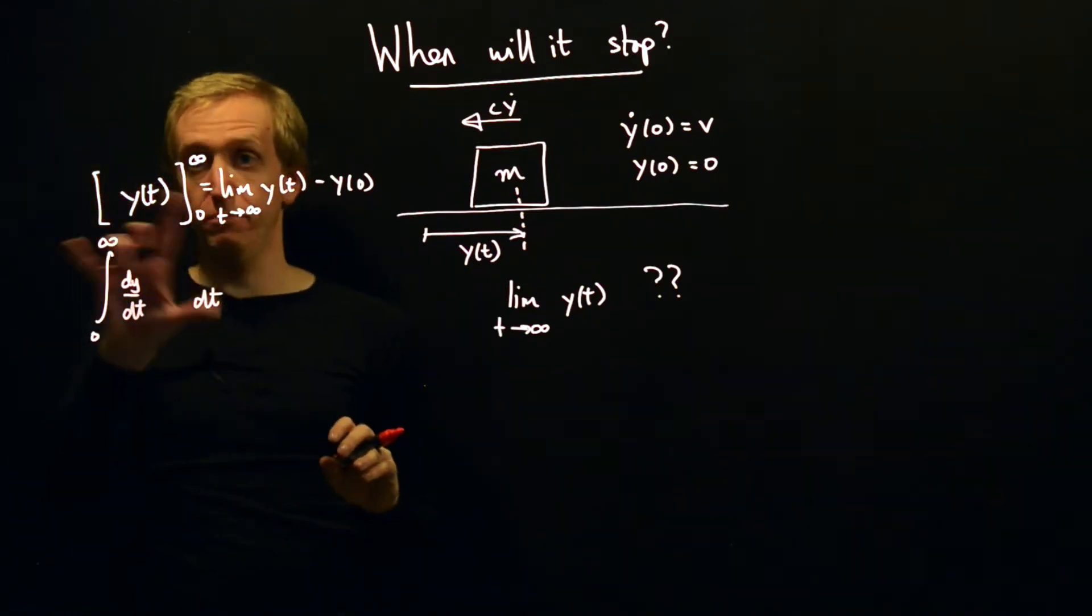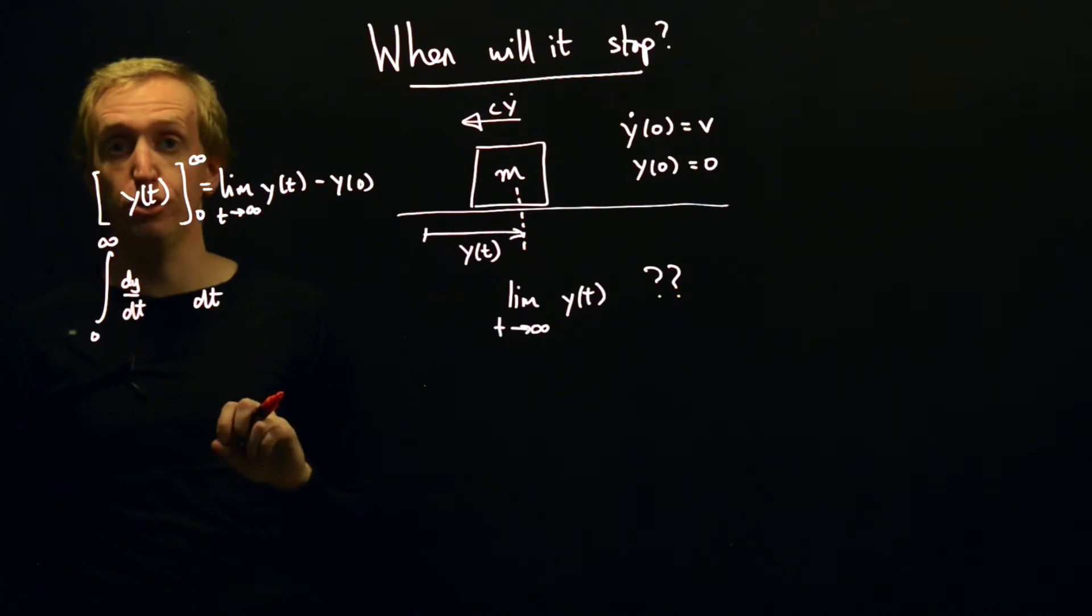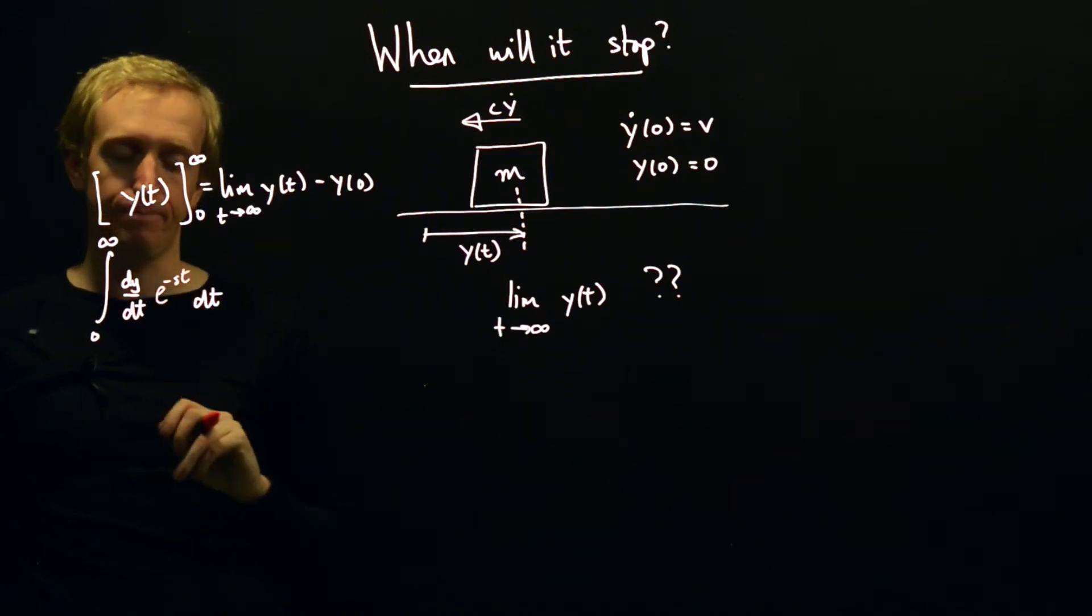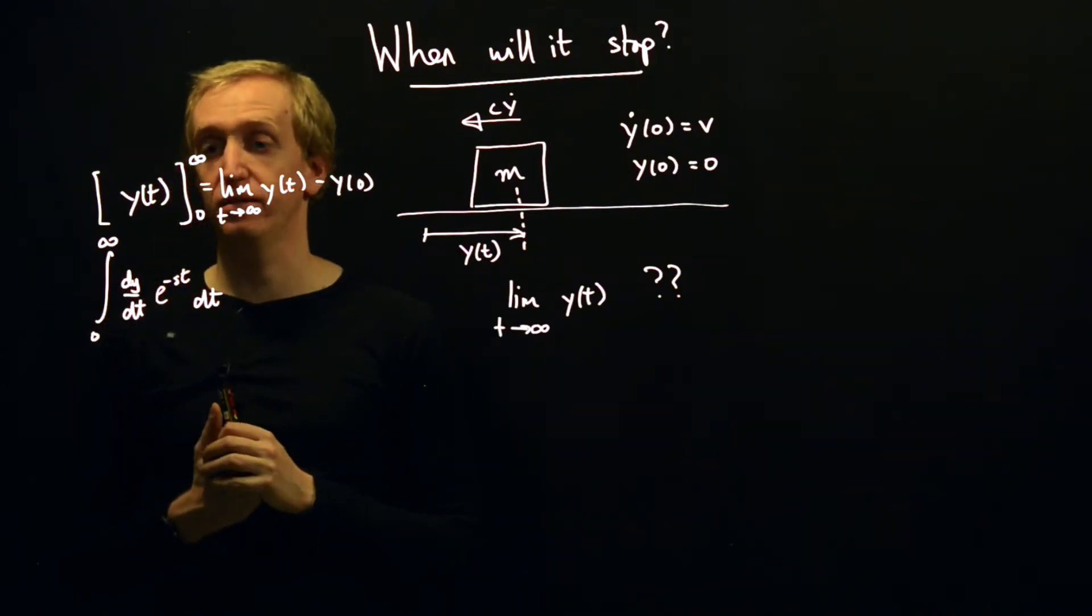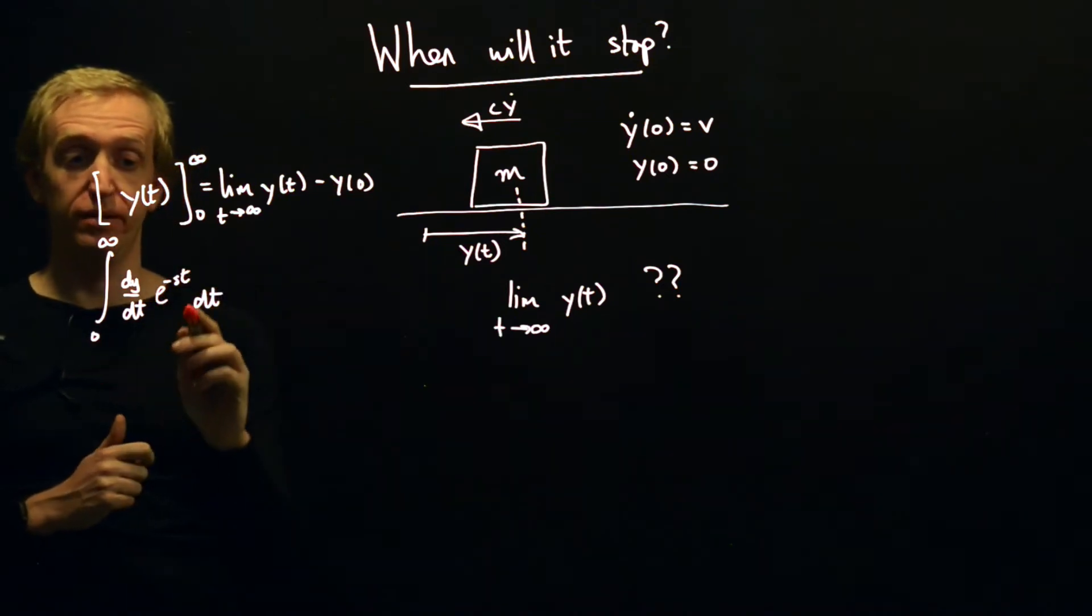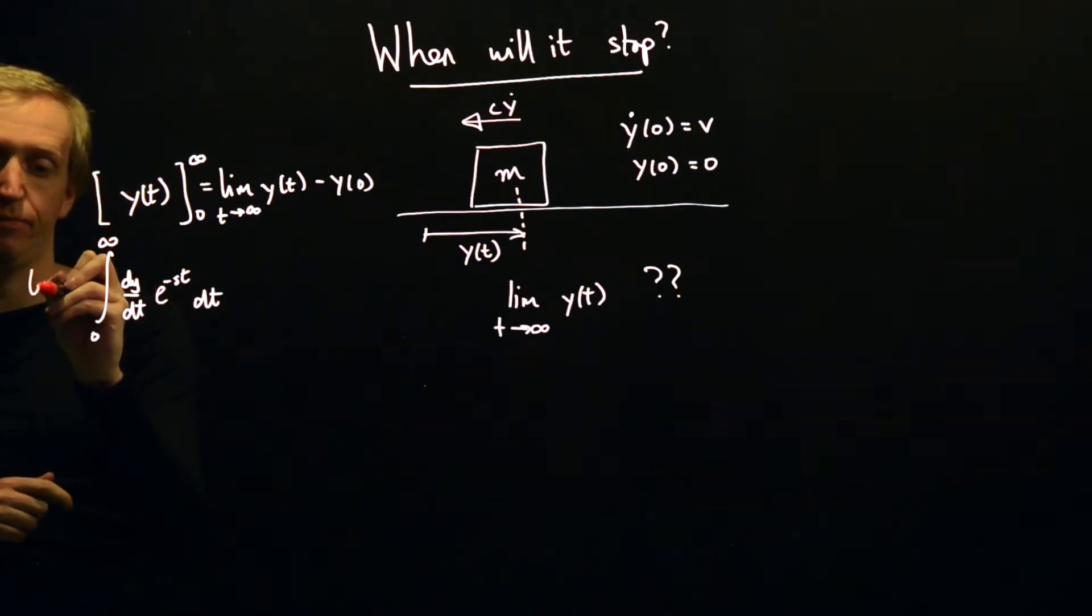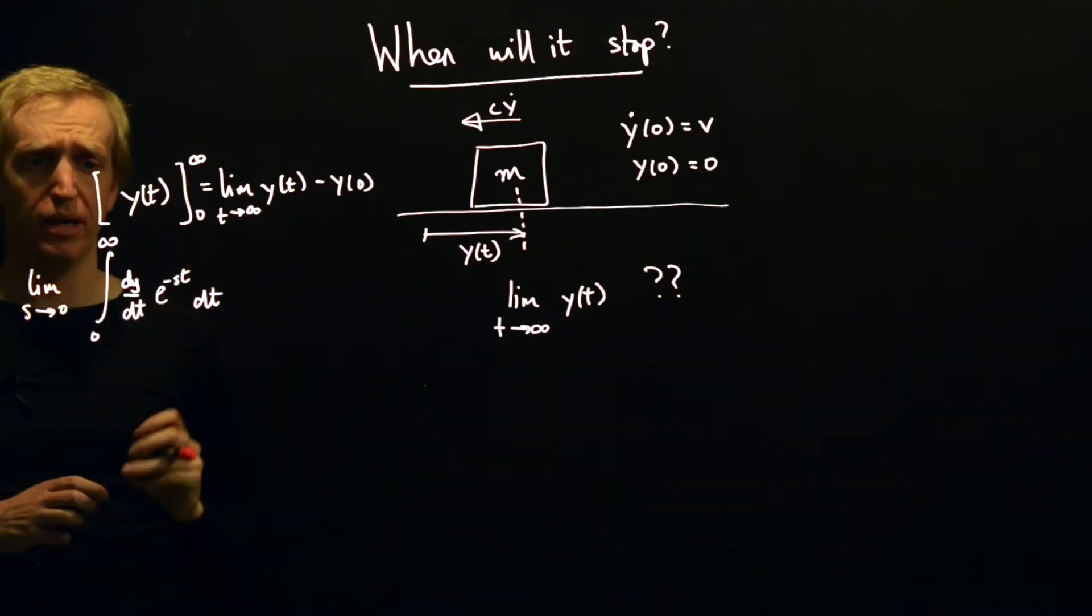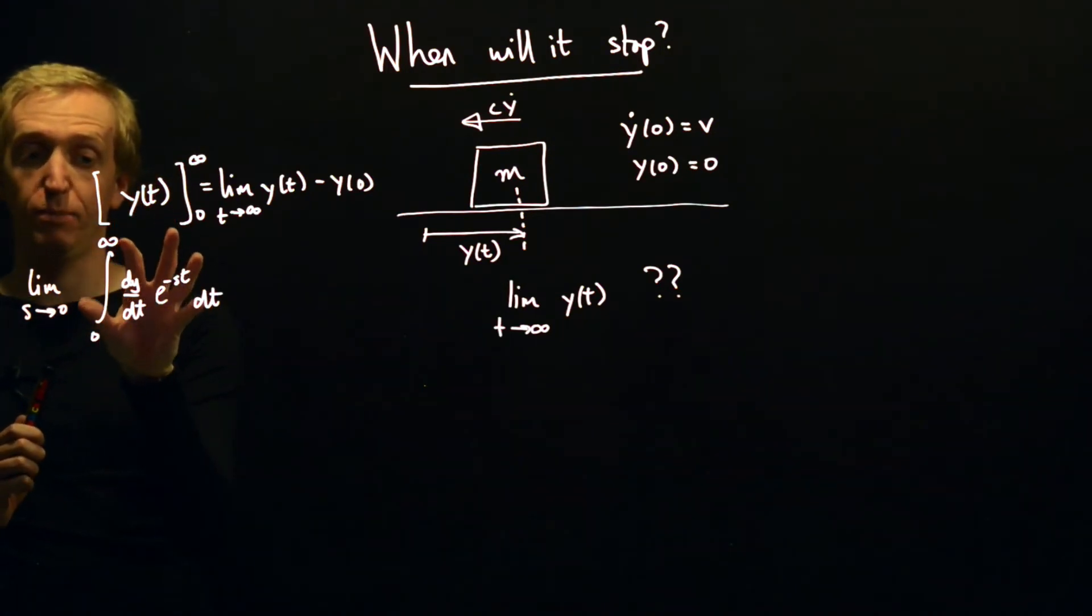So we've got sort of lots of the pieces of the definition of the Laplace transform. We've got the right limits. We've got the right integration variable. What are we missing? We're missing our e to the minus st. And so how can we make this give us y(t)? Well, we want this term here to be equal to 1 and to make this term equal to 1 what we have to do? We have to set s as equal to zero. So we need to take the limit as s goes to zero of this thing.